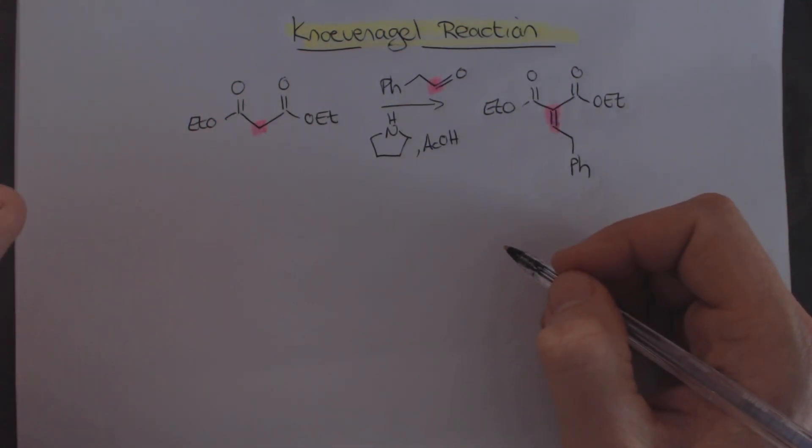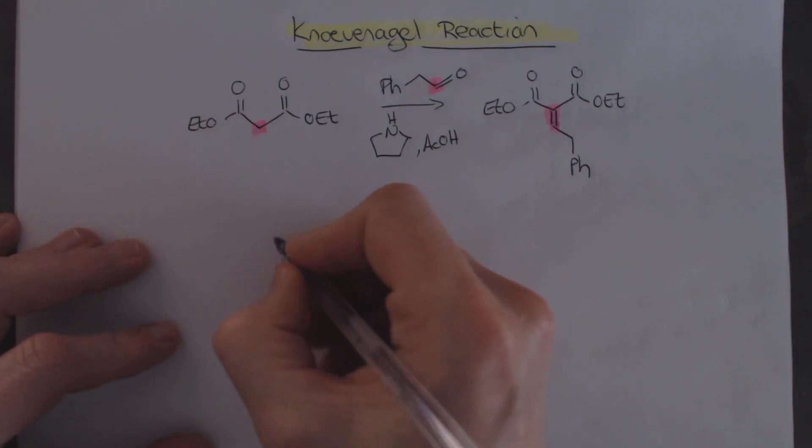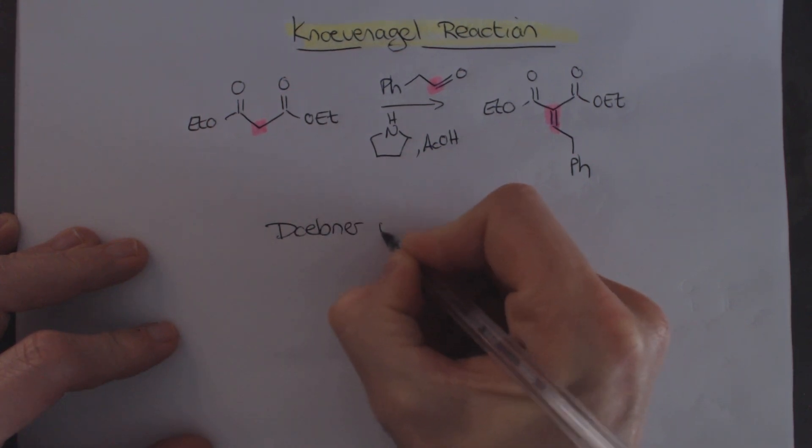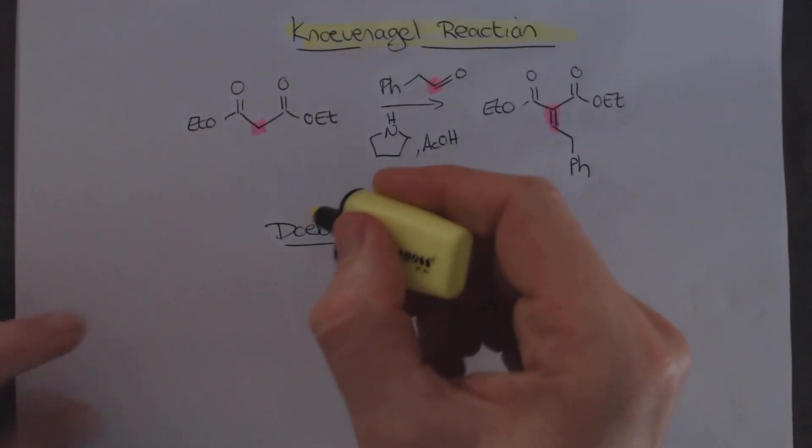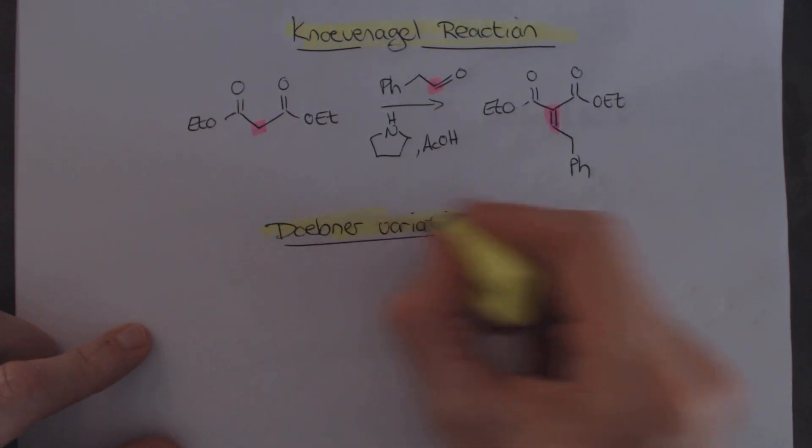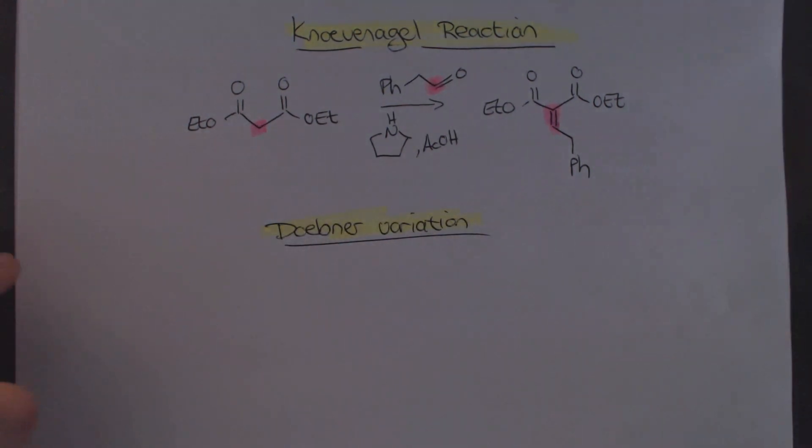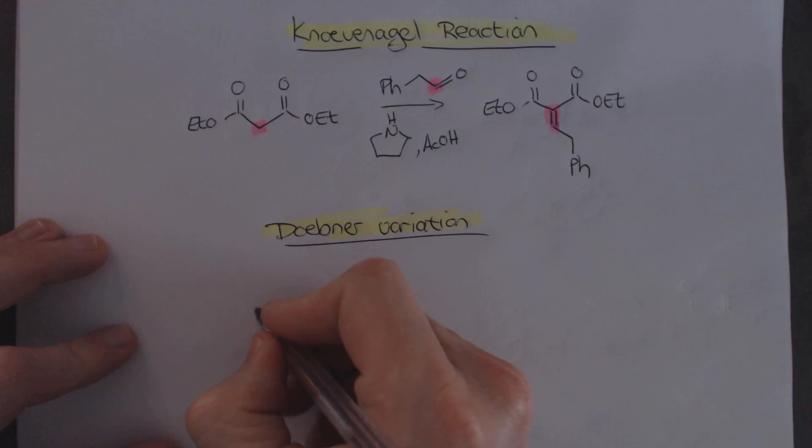But there is actually a variation of the Knoevenagel aldol reaction which does this straight away, and it's called the Doebner variation. And here again, you don't need to know the names of these, it's just because these were the people who discovered them all. So they called that, but really the important thing here is the chemistry. And the Doebner variation is just to start with the carboxylic acid itself, the diacid.